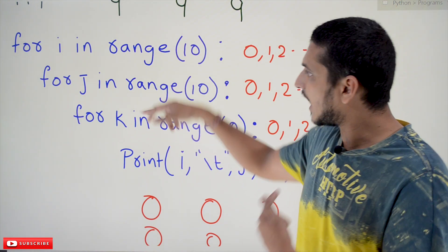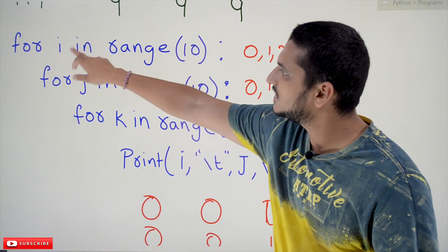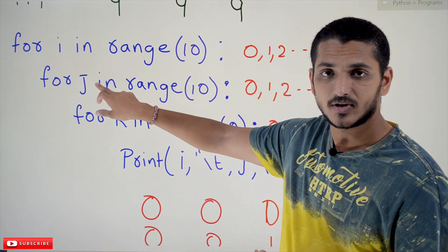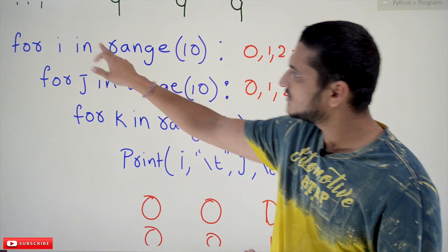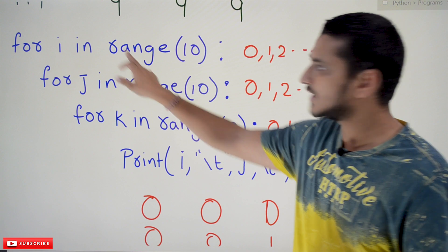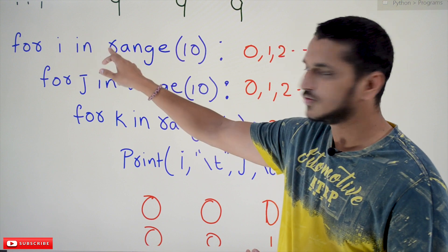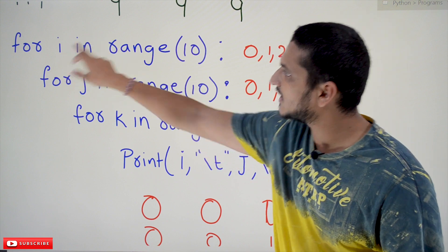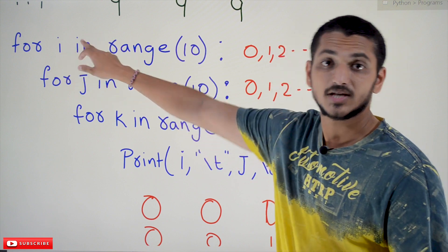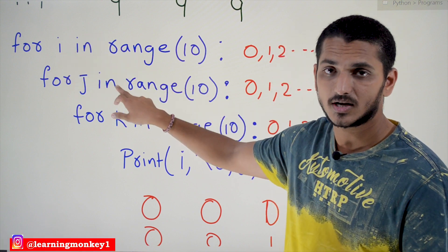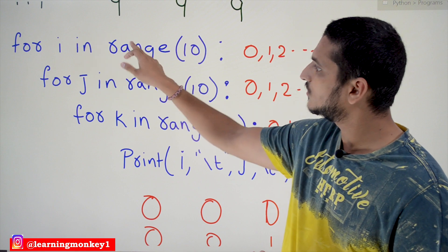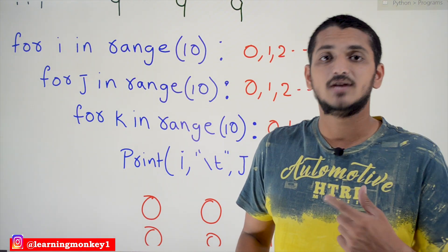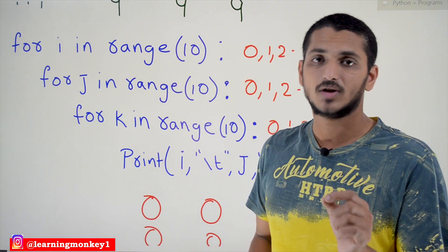This same pattern repeats for i as well. For i equal to 0, j executes for 10 times; for i equal to 1, j executes for 10 times; for i equal to 2, j executes for 10 times; for i equal to 3, j executes for 10 times; and for i equal to 9, j executes for 10 times. This is how it will execute.